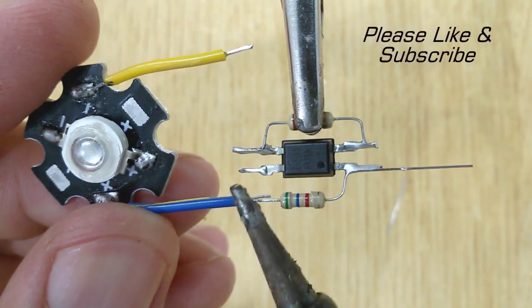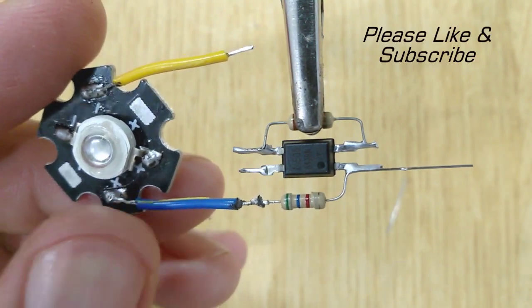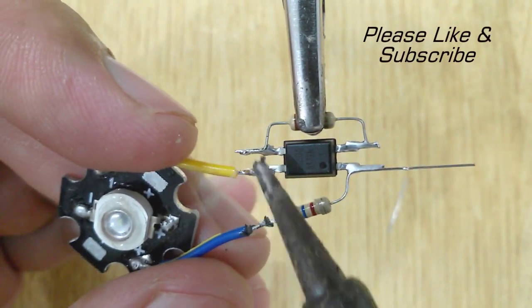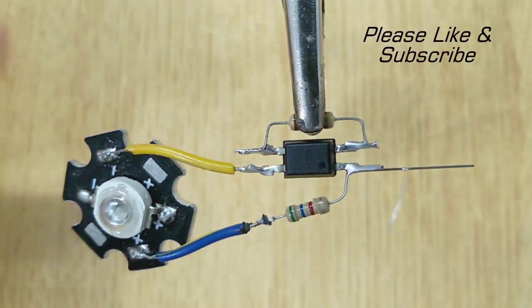Now solder the positive pin of LED with the 5.6K ohms resistor and the negative pin of LED with the fourth pin of PC817.